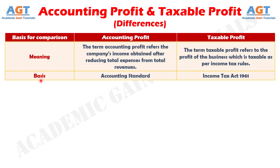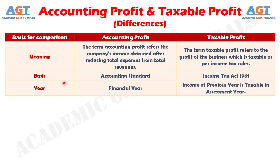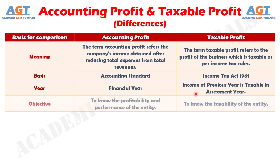Number 2: accounting profit is based on accounting standards, whereas taxable profit is based on the Income Tax Act 1961. Number 3: accounting profit is for a particular financial year, while taxable profit is for the previous year assessed in the assessment year.